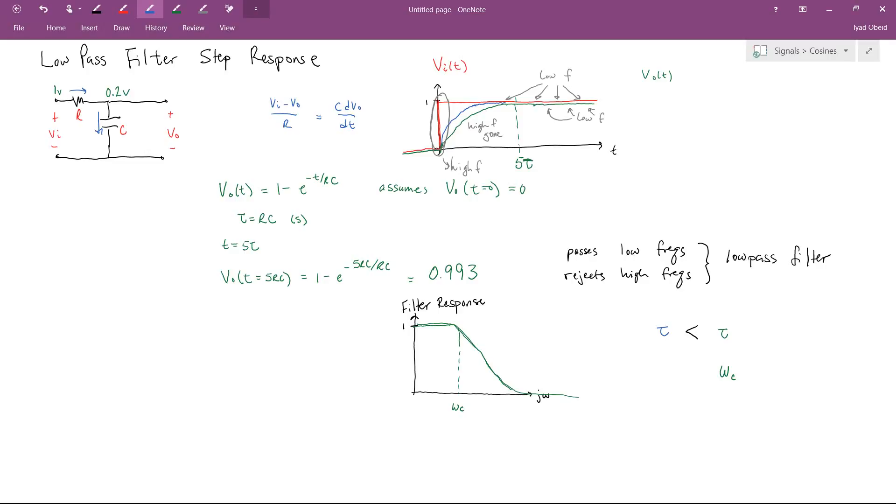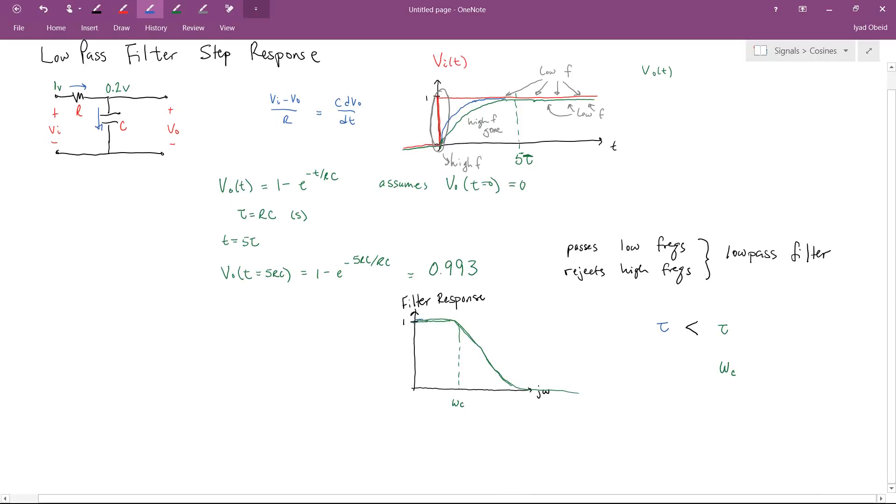Because the blue filter charges faster, that implies that it is passing more high frequencies in order to charge faster. So if we were to look at the frequency response of the blue filter, what we might expect is something that is still a low pass filter, it is still passing low frequencies and rejecting high frequencies, but it has a higher cutoff frequency. It has a cutoff frequency that allows it to pass more high frequencies.